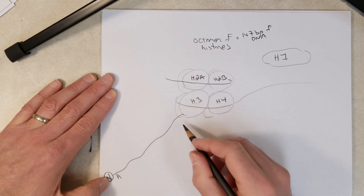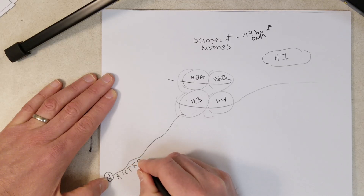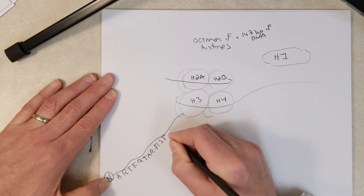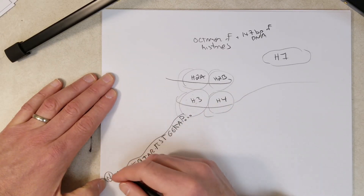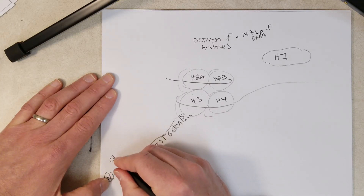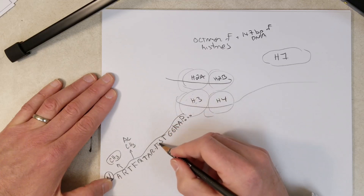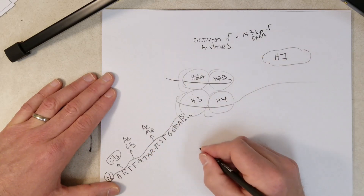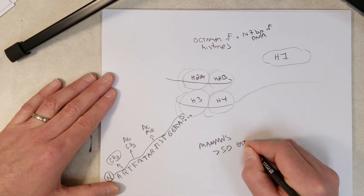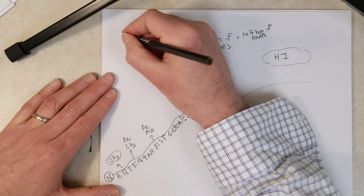The tail is made up of 20 to 40 amino acids depending on which histone we're talking about. Labeling some amino acids in this tail: arginine can be methylated, lysines can be acetylated or methylated — there's another lysine here, also acetylated or methylated. Phosphorylation and ubiquitination are other modifications. In mammals there are over 50 enzymes charged with modifying the histone tails.